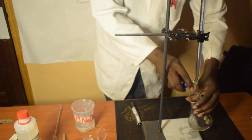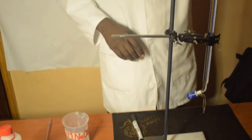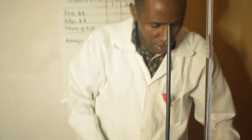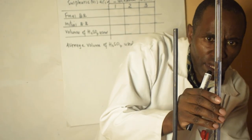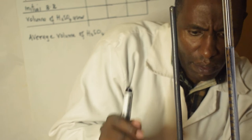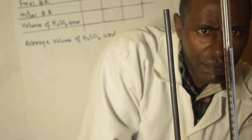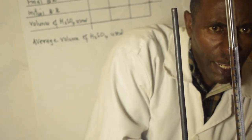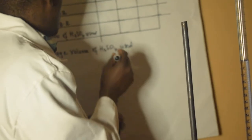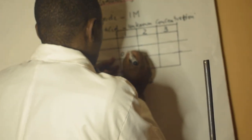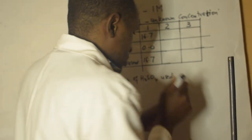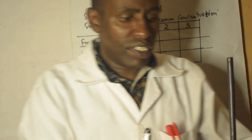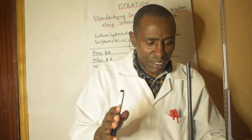The color has changed — the pink color has just appeared — and what I will do here is record the volume. I have 16.7 cubic centimeters. Now I'm going to do a repeat of the same — I'm going to repeat this three times to get the average titer.